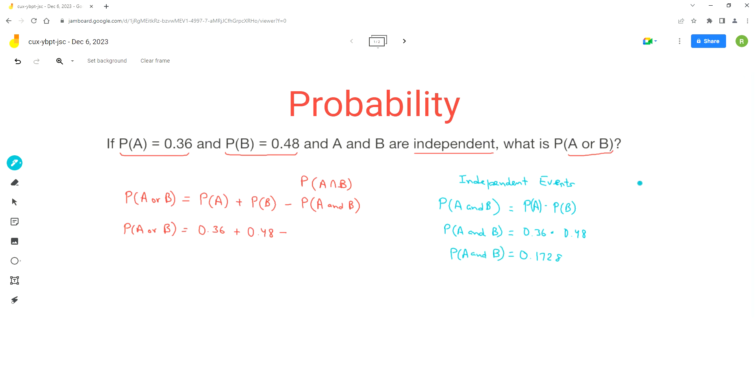Now we can substitute this value in this rule of addition formula. So it goes to 0.1728. Now we just have to do this calculation in our calculator to get the final answer. So I get 0.6672. So this is the exact answer I got from the calculator.